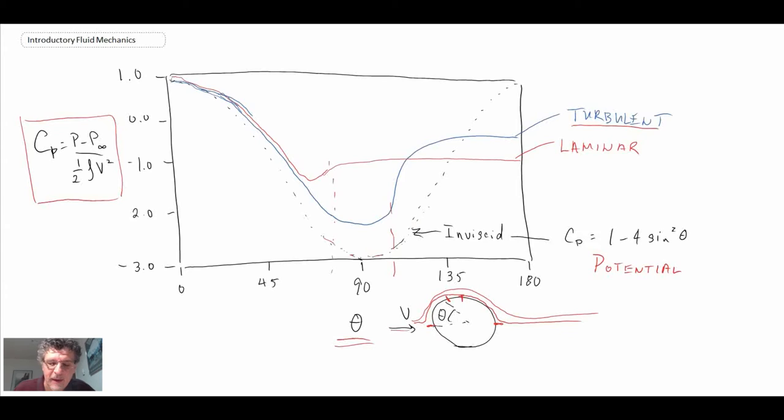Consequently, with lower pressure drag on the back of the cylinder, you don't have as much form drag on the back of the cylinder, and that reduces the drag coefficient for the turbulent boundary layer. That is flow over a cylinder.